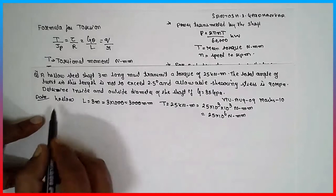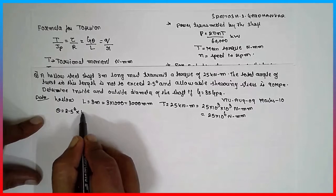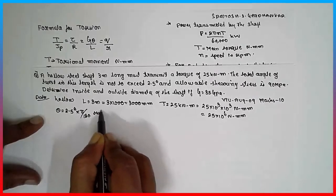The total angle of twist in this length is not to exceed 2.5 degree. Theta is given 2.5 degree. It has to be converted into radian, multiplied by pi by 180, it will get converted in terms of radian.